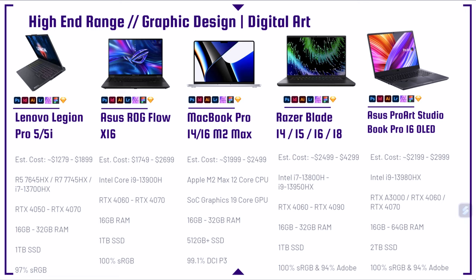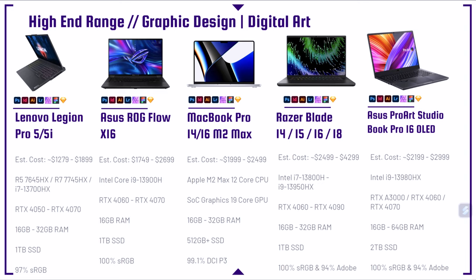Next up on the list is the Lenovo Legion Pro 5 and 5i. These are the best bang for buck from a 16-inch laptop perspective — great performance with very little ceiling on performance. You can edit 6K, and you can even get away with editing 8K footage on the Legion Pro 5 and Pro 5i. Bright screen, color-accurate screen. They are a gaming laptop — pretty thick and chunky — but for the price you can usually find these anywhere around $1,279 all the way up to below $2,000. The $1,279 configuration is great performance for any digital artist or graphic designer.